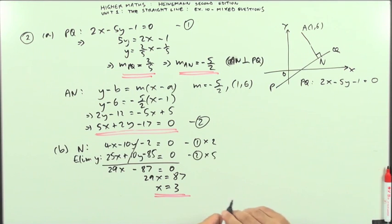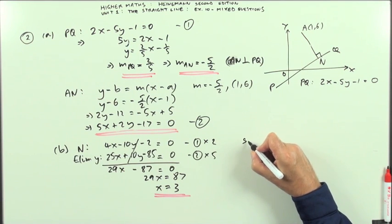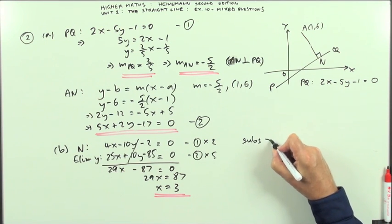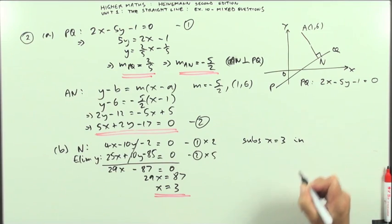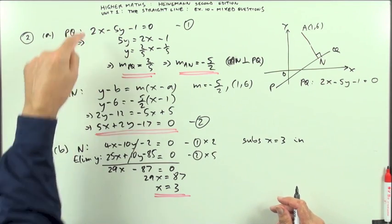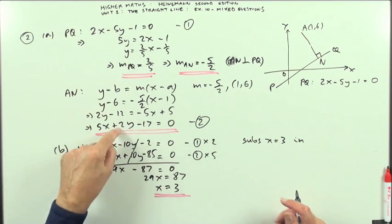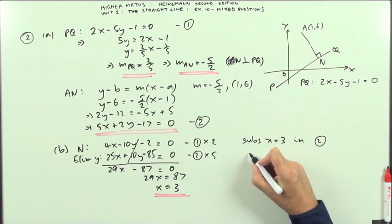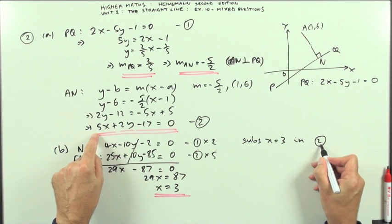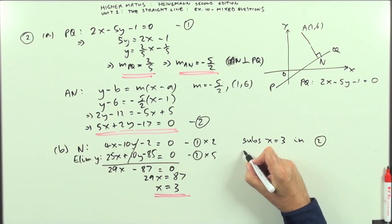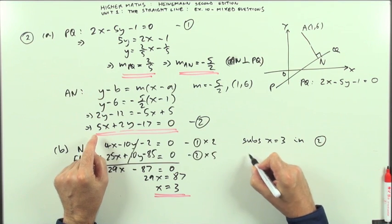Then substitute it back in. Just keep that level with this part, aesthetically. So substitute x equals 3 in whichever one you think is more convenient for finding y. Well, that's just a plus 2. I'll use equation 2. So you rewrite equation 2, putting 3 in place of it.